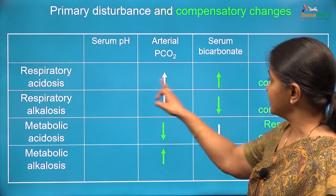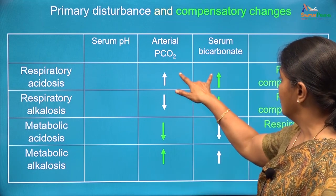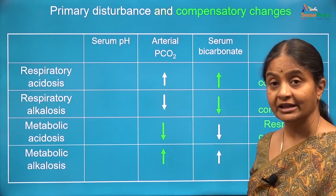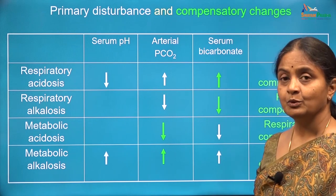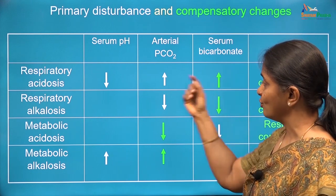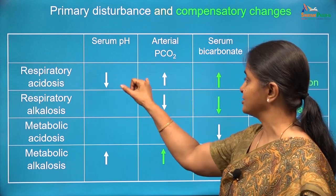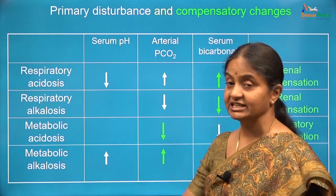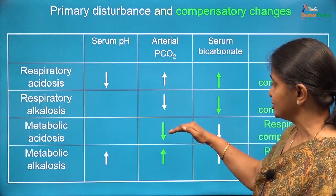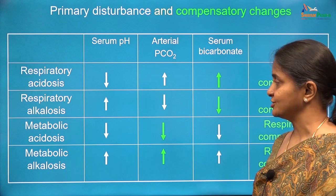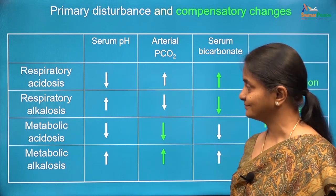You would notice that in respiratory acidosis and metabolic alkalosis, both acid and base have increased. So how would you know whether it is a primary respiratory acidosis or a primary metabolic alkalosis? The pH will tell you. Even though there is compensation, it is almost always an under-compensation. Therefore, when the pH is low, this condition has to be acidosis and therefore respiratory acidosis. If pH is higher, this has to be alkalosis and therefore metabolic alkalosis. These two conditions have the same profile in terms of carbon dioxide and bicarbonate concentration, but the pH will be different. We will see more of this in the lectures that will follow. Thank you.